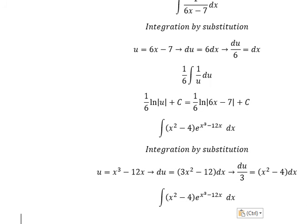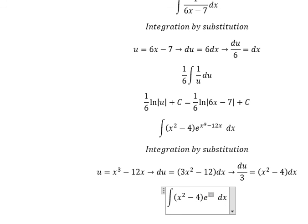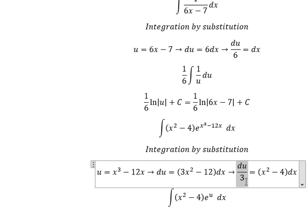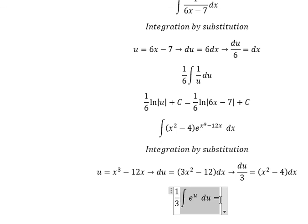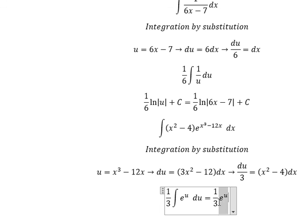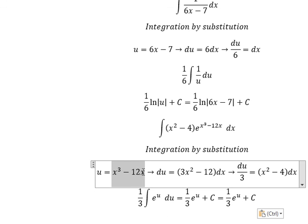So we change the expression by u, and x squared minus 4 dx we change by this expression. The integral then gives us e to the power of u, plus C. Substituting back, u is equal to x cubed minus 12x.